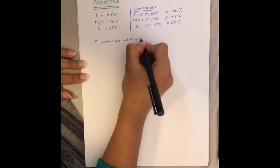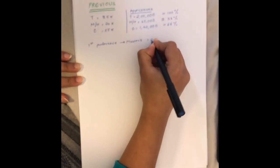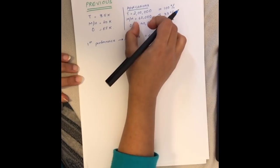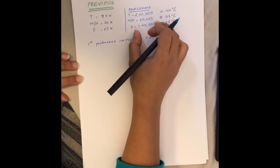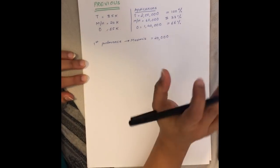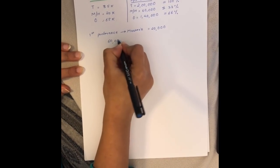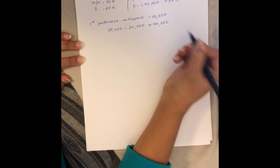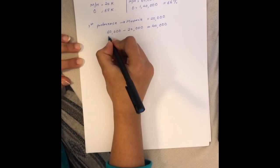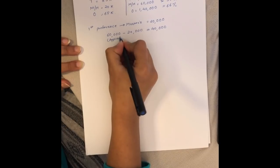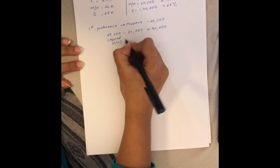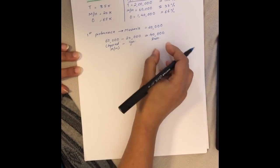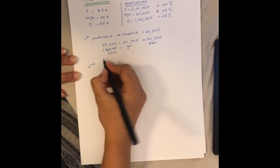Consider the first preference which was for masters. The masters category equals 20,000. If there were 60,000 students who applied for H1B, out of that 20,000 would surely get it in the first slot. If you subtract 60,000 minus 20,000, what remains is 40,000 who are remaining masters applicants.